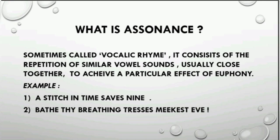The purpose of assonance is to achieve a particular effect of euphony. This term denotes pleasing, mellifluous sounds, usually produced by long vowels rather than consonants, though liquid sounds can also be produced by euphony. More often we consider euphony as producing long vowel sounds. When vowel sounds are put together in a line, they give a beautiful pleasing sound and a mellifluous effect of euphony — and that is assonance.